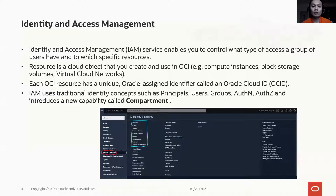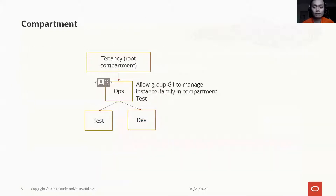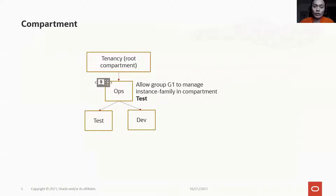Besides using traditional identity concepts, we also introduce compartments in the service. A compartment is a collection of related resources that can be accessed only by groups that have been given permission. Compartments help you organize and control access to your resources. Each resource belongs to a single compartment, but resources can be connected or shared across compartments. Compartments can be renamed after creation, and a compartment can have sub-compartments up to 6 levels deep. Sub-compartments inherit access permissions from compartments higher up in the hierarchy.